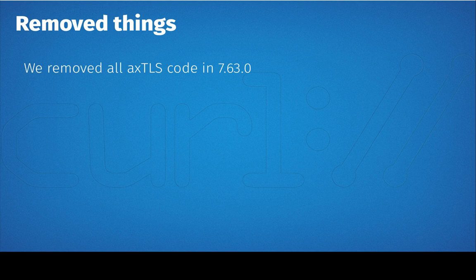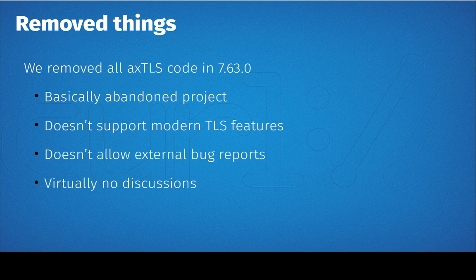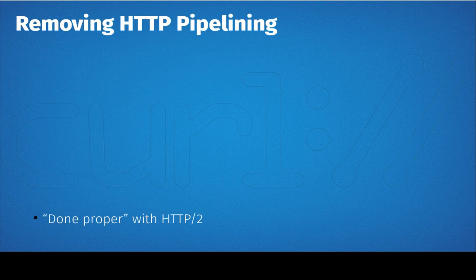We already removed all support for the axTLS backend a while ago, because it's just not good enough — basically a bad project. It doesn't support modern stuff, doesn't even support SNI in TLS, and it's way behind other TLS implementations. We shouldn't push users into axTLS; there are lots of other TLS alternatives that are much better. So we ripped it out.